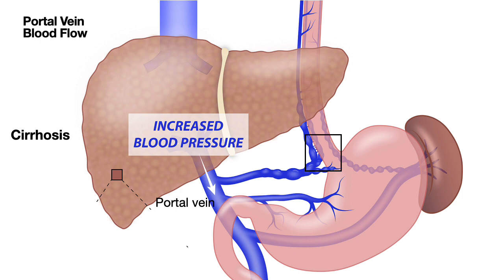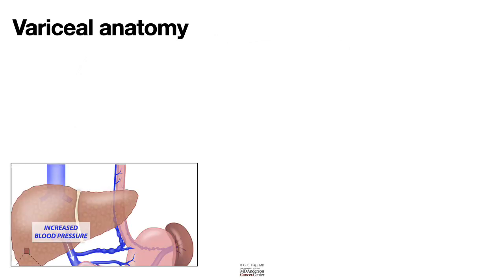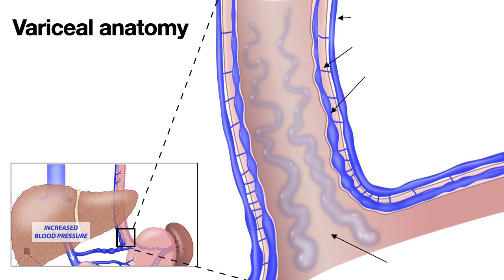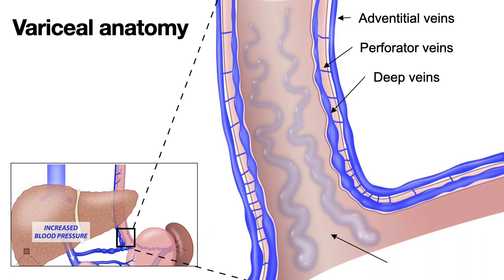Let us look at the anatomy of esophageal varices in more detail. Here is the lower esophageal segment. Understanding the venous anatomy of the GE junction and lower esophagus is critical. With portal hypertension, the adventitial veins become bigger, the perforator veins become bigger, and the deep venous plexus inside the esophageal wall — especially in the submucosa — becomes bigger, developing as varices.